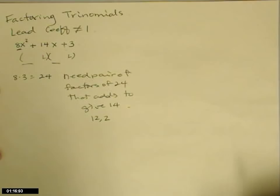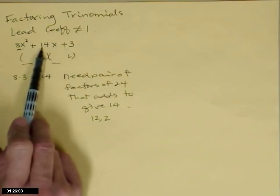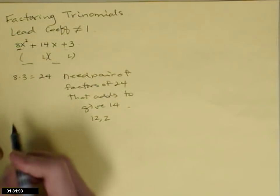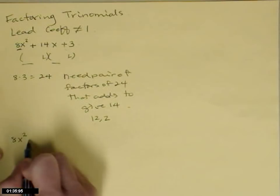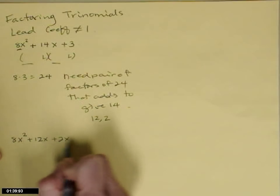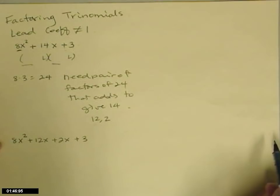The pair is 12 and 2 — they multiply to 24 and add to give 14. Now we take that 14x and rewrite it in terms of this pair. Everybody else stays the same, so we get 8x squared plus 12x plus 2x plus 3. We've gone from a trinomial with three terms into a polynomial with four terms.